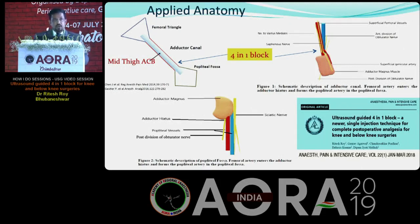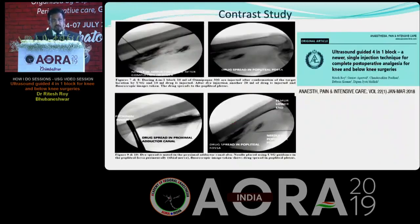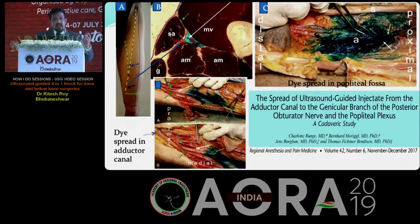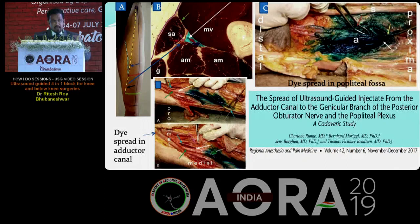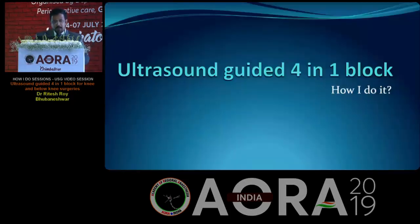The drug trickles along with the superficial femoral artery into the popliteal fossa and blocks the sciatic nerve. For our first case, we did a contrast study and found that after injecting the drug, it spread approximately up to the beginning of the adductor canal proximally and distally into the popliteal fossa. A cadaveric study also motivated us to publish, as injection at the same place showed drug spreading into the popliteal fossa, staining the popliteal plexus and the adductor canal — though the sciatic nerve and nerve to vastus medialis were not stained in that study.